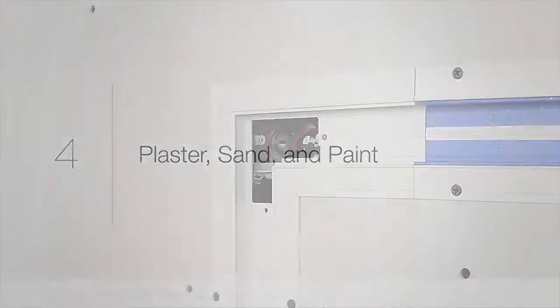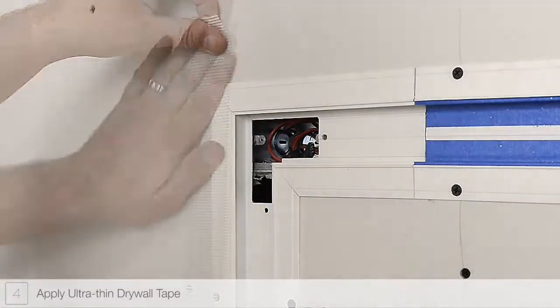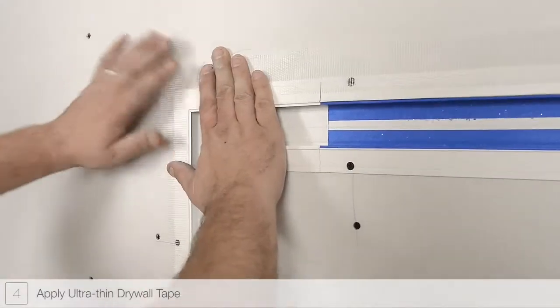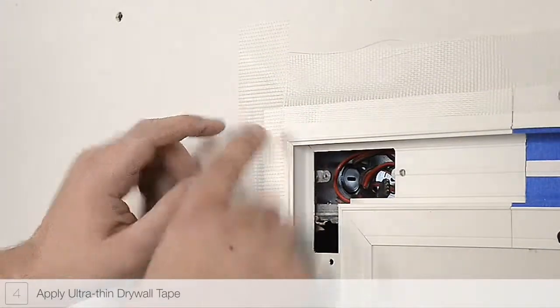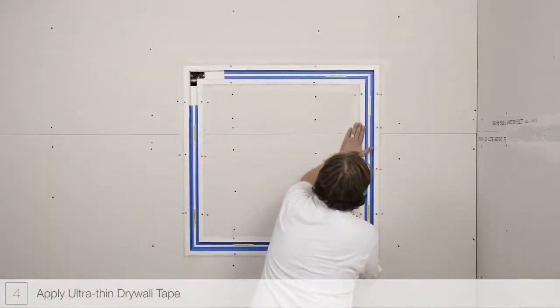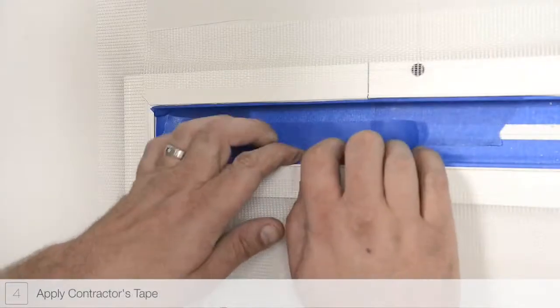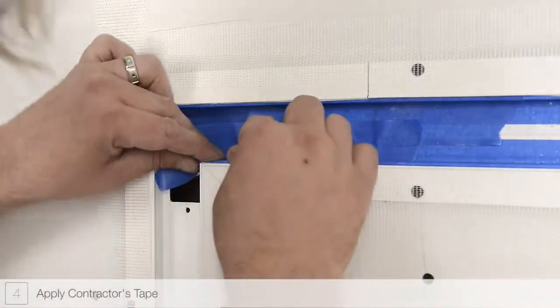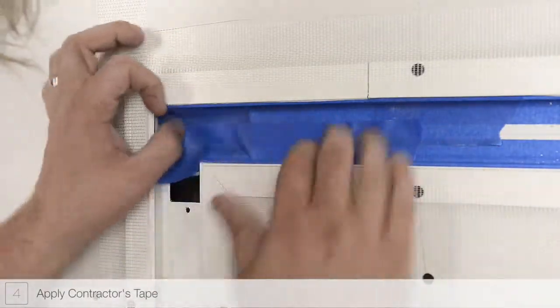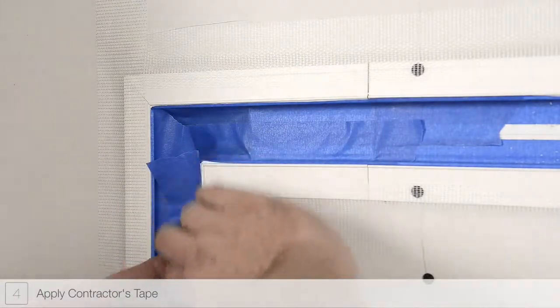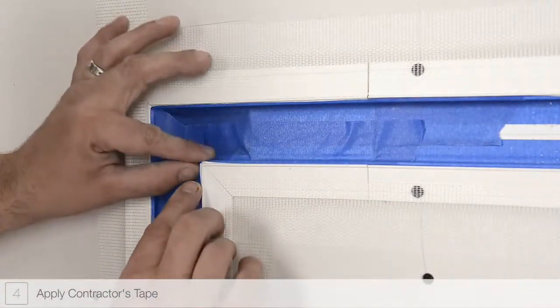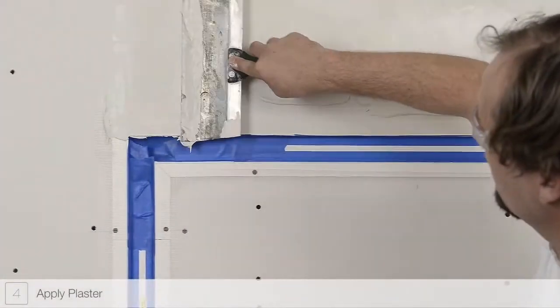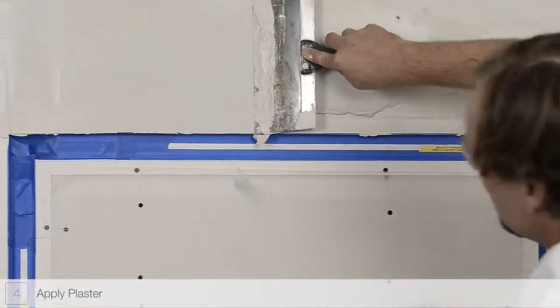Step 4. Apply ultra-thin drywall tape to the true line channel. Do not overlap sections of drywall tape. Before beginning the plastering process, mask the interior of the channel using contractor's tape. This will help prevent dust or debris from entering the channel. Plaster, sand and paint the installation.